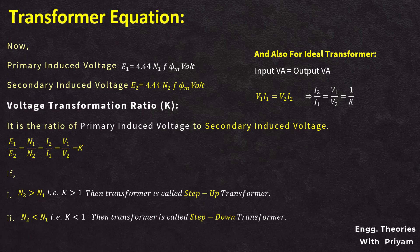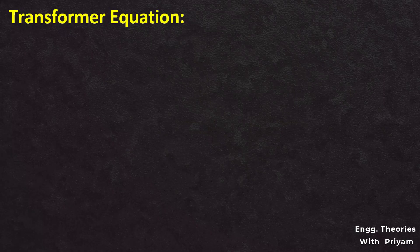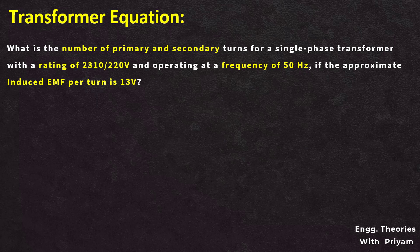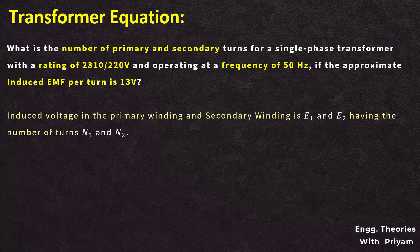Now let's see a mathematical example based on the transformer equation. We need to determine the number of turns in primary N1 and secondary N2 for a single-phase transformer with a rating of 2310 by 220 volt, operating at a frequency of 50 hertz, if the induced EMF per turn is equal to 13 volt. The induced voltage in primary and secondary windings is E1 and E2, and the number of turns in primary and secondary is N1 and N2.